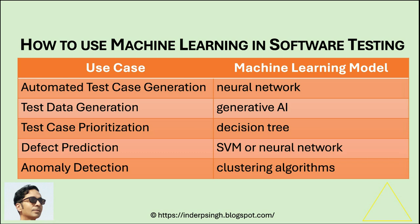For test prioritization in software testing and artificial intelligence, machine learning can analyze historical failure rates to determine which test cases are most likely to find defects. For defect prediction, a machine learning model like an SVM or a neural network can predict where defects are likely to occur in the code.